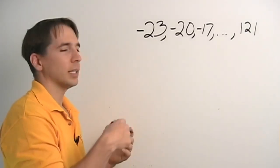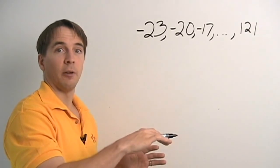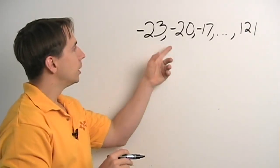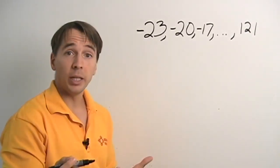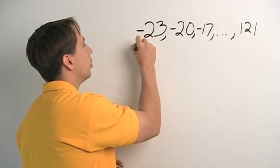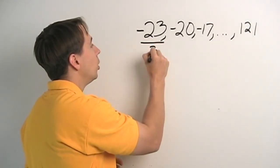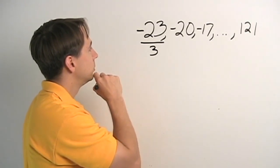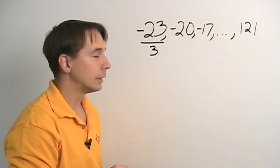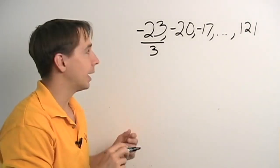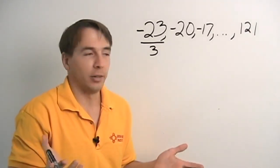Now, before when we were taking steps of 4, we divided by 4 to make them steps of 1. Here, we have steps of 3. So, we try dividing by 3 to make those steps of 1. And when we divide 23 by 3, we get a fraction. Now, maybe we can deal with that, but let's be honest. Who likes fractions? Nobody likes fractions.